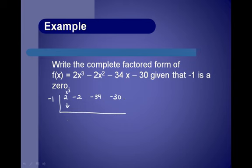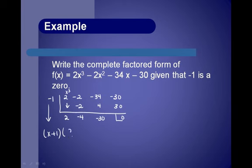We drop the first term. Negative 1 times 2 is negative 2. Combine: we get negative 4. Negative 1 times negative 4 is positive 4; combine to get negative 30. Negative 1 times negative 30 is positive 30, which gives us a remainder of 0. That shows negative 1 is a zero, so the factor is x plus 1. The other factor becomes 2x squared minus 4x minus 30. We can pull out a GCF of 2, giving x squared minus 2x minus 15.